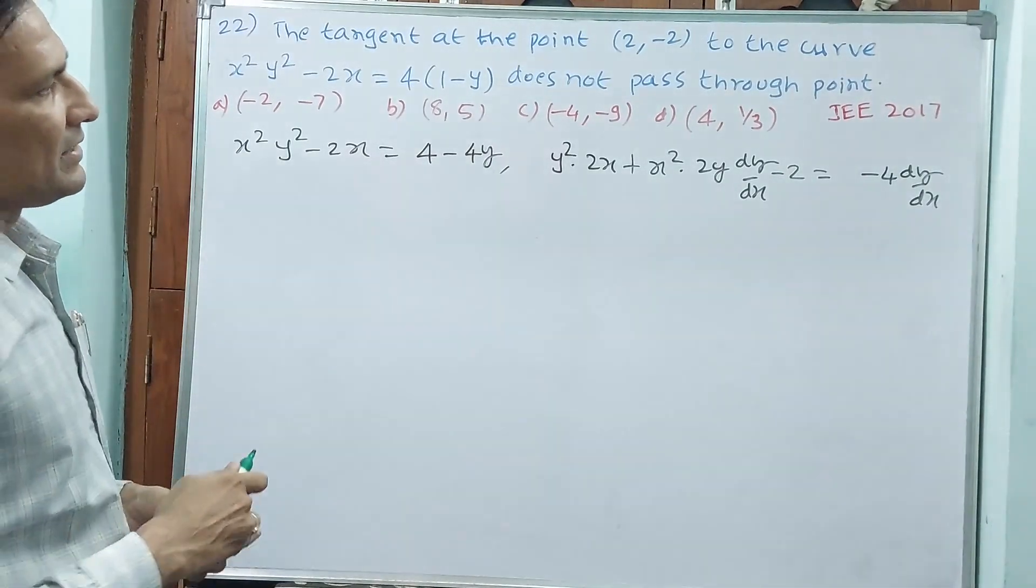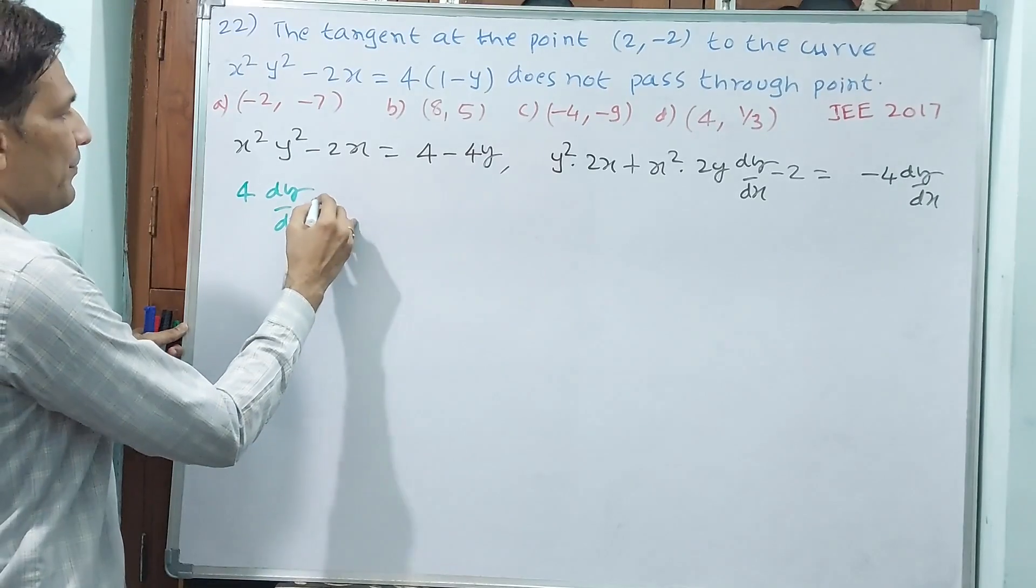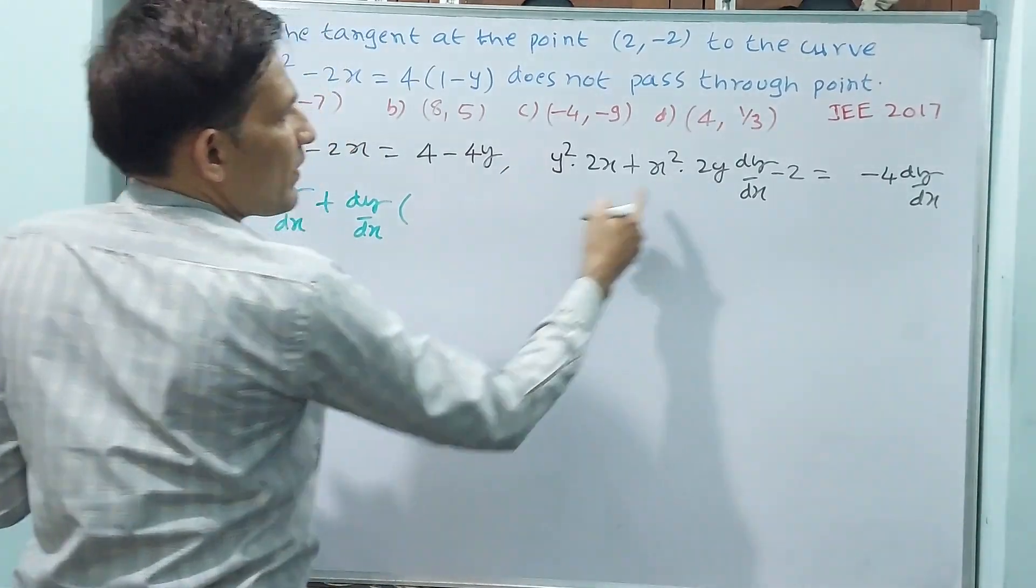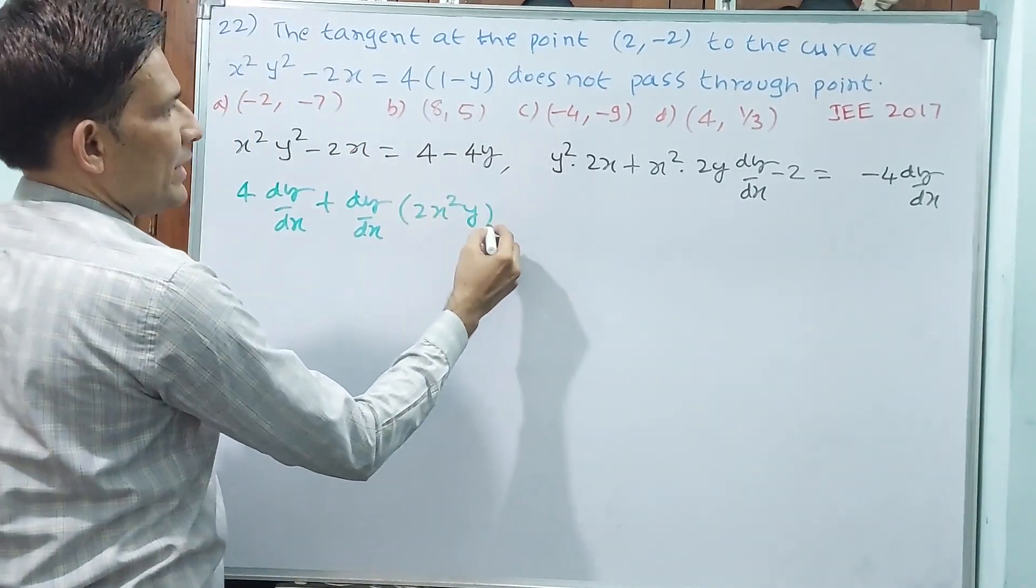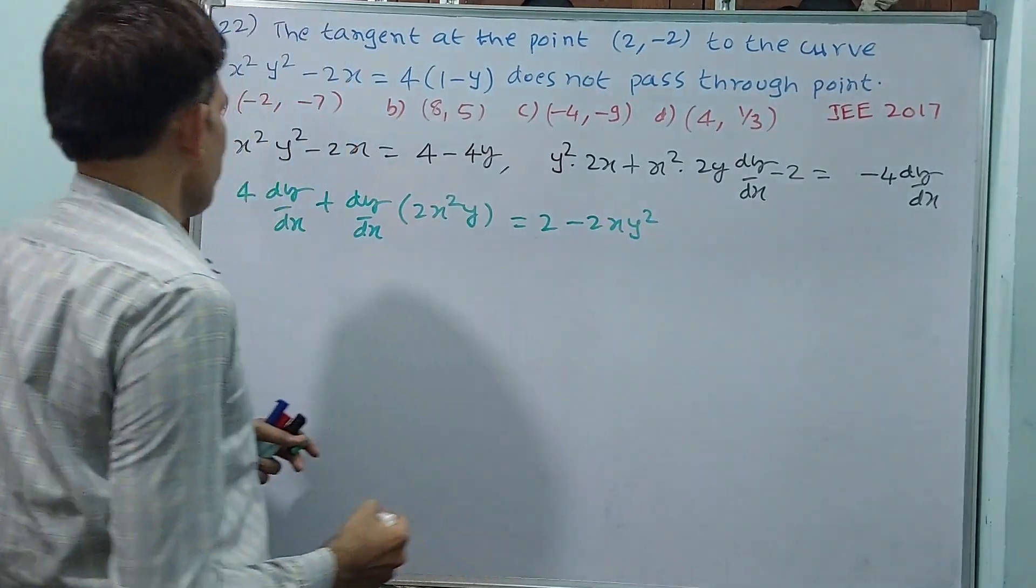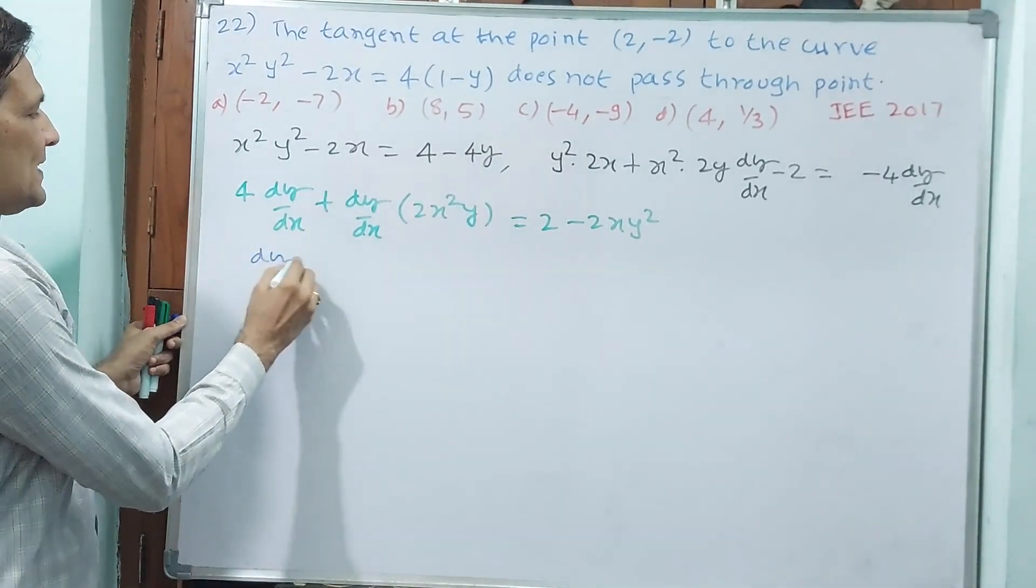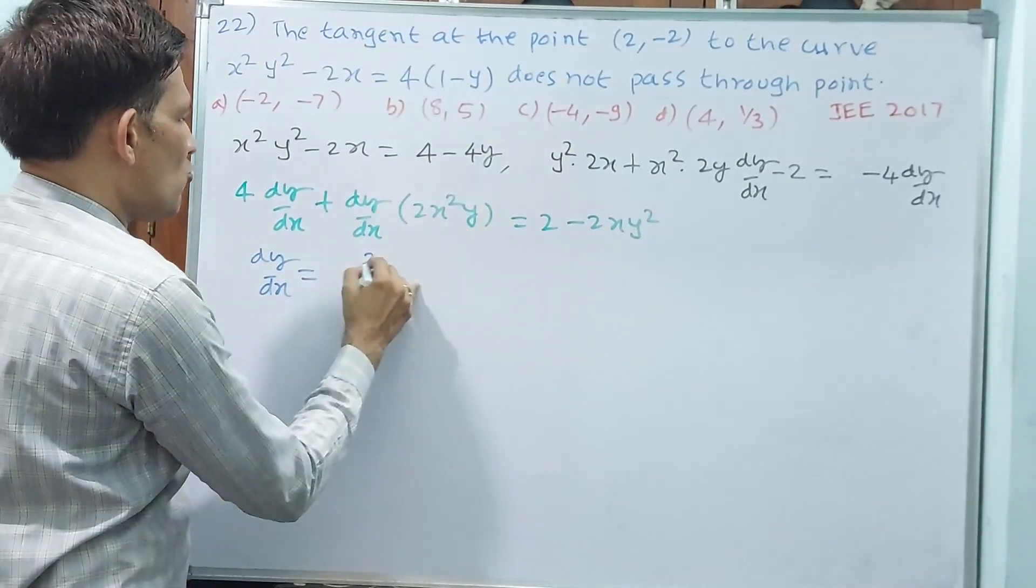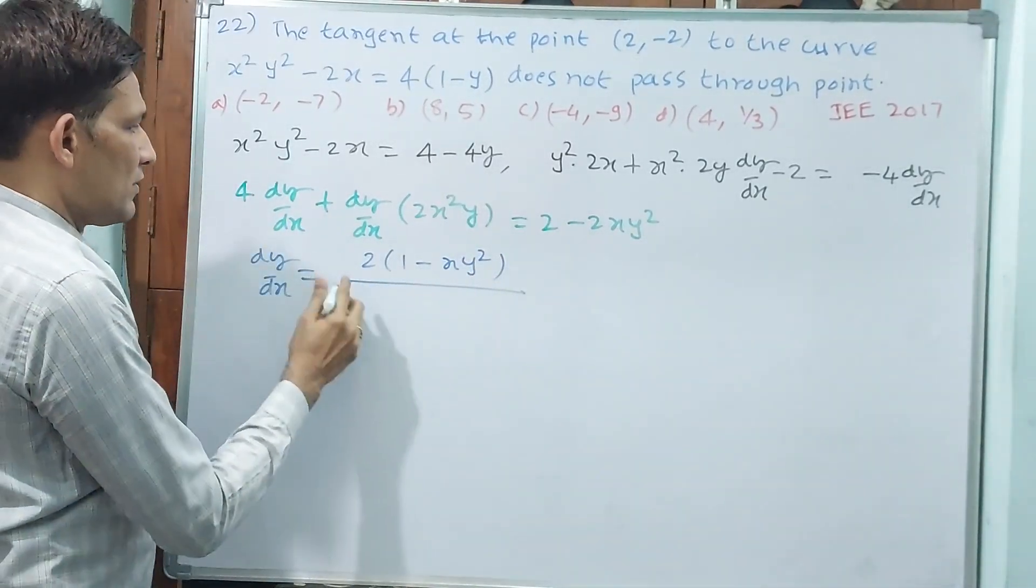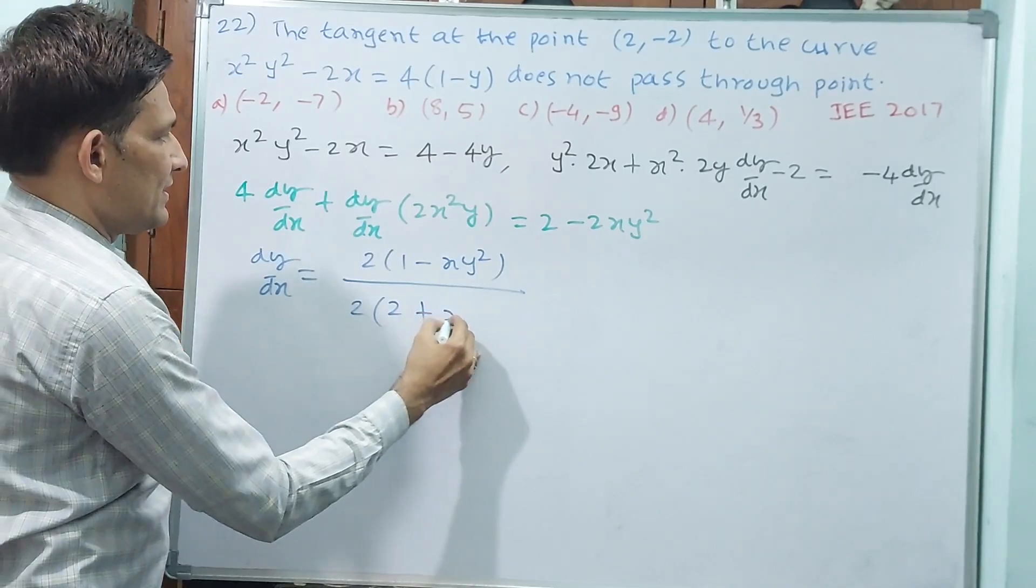Now, I bring this dy/dx to this side. 4(dy/dx) plus dy/dx · 2x²y is equal to 2 - 2xy². Now, if you take dy/dx common, dy/dx is equal to, I am taking 2 common, 1 - xy² divided by 4 plus x²y.